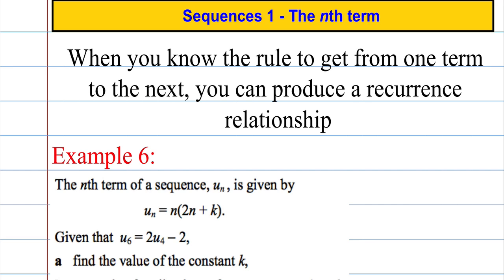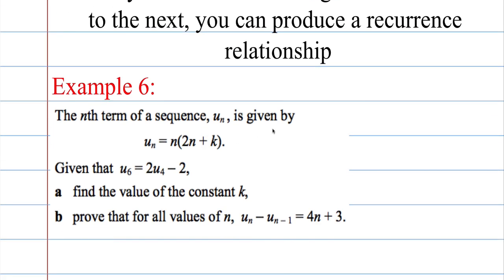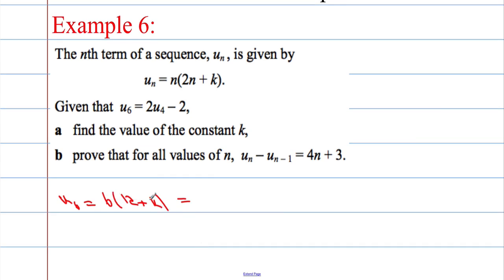Now we're going to have one more example. The nth term of a sequence u(n) is given by u(n) equals n times (2n plus k). We're told that u(6) equals twice u(4) minus 2 — find the value of the constant k. Let's write down u(6). u(6) will equal 6 times (2 times 6 plus k), which is 6 times (12 plus k), which equals 72 plus 6k.